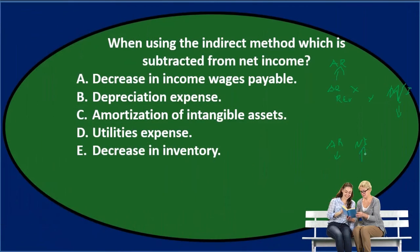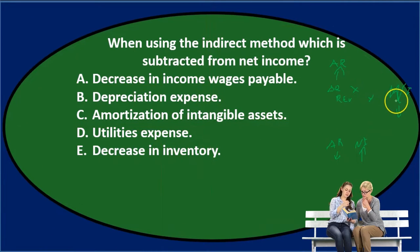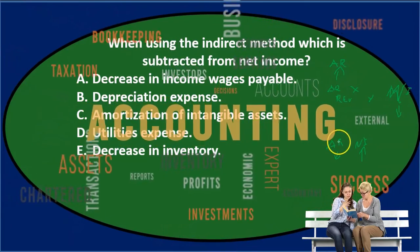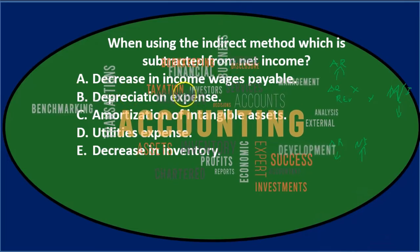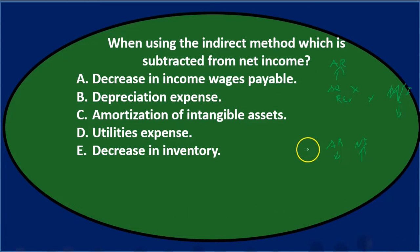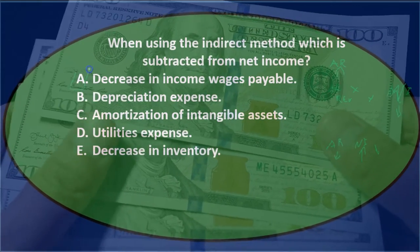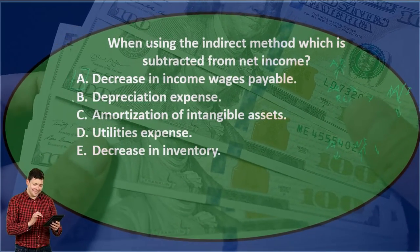The opposite is true for any current liability. If a liability goes up, we increase net income; if a liability goes down, we decrease net income. So: A) decrease in wages payable — wages payable is a liability; if the liability goes down, net income goes down. So it looks like A is the answer.